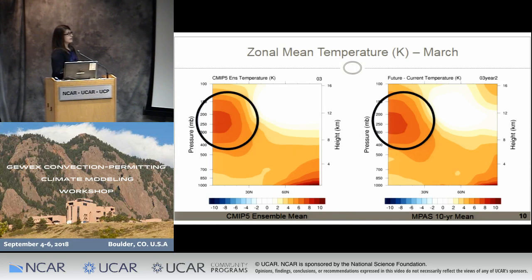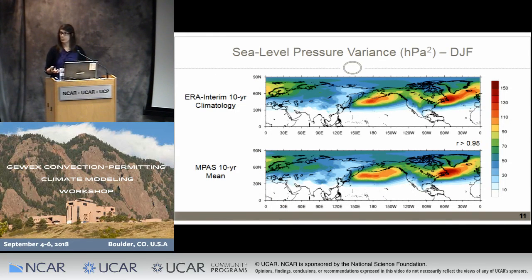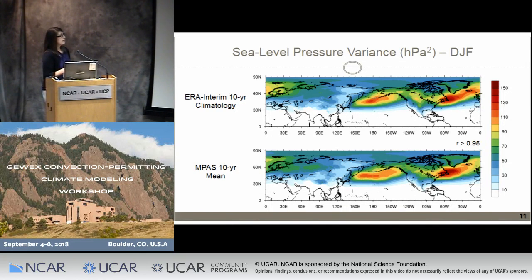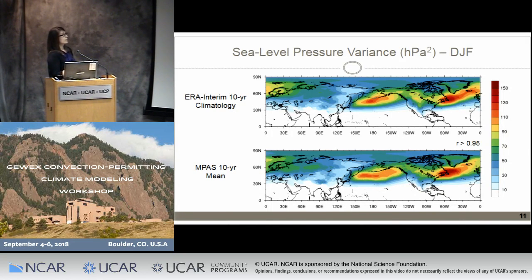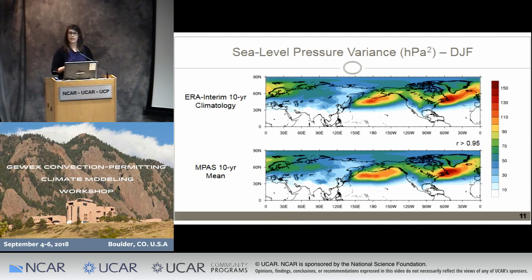For model validation, we wanted to make sure we were getting the extratropical storm tracks. Rather than using a Lagrangian tracking algorithm, we looked at sea level pressure variance as a proxy for storm track activity. We have the ERA climatology on top — computed only using our 10 simulation years for a more apples-to-apples comparison — and the 10-year MPAS mean on the bottom. Both the North Pacific and the North Atlantic storm tracks are evident in our model. The Pacific storm track is slightly weaker and more zonally oriented than in ERA, but the pattern correlation coefficient is very high with R greater than 0.95.